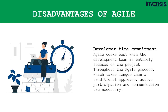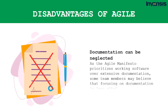It also implies that developers must commit to the project for the entire period. Finally, documentation can be neglected — as the Agile manifesto prioritizes working software over extensive documentation, some team members may believe focusing on documentation is less vital. While thorough documentation does not guarantee project success, Agile teams must strike the correct balance between documentation and dialogue.